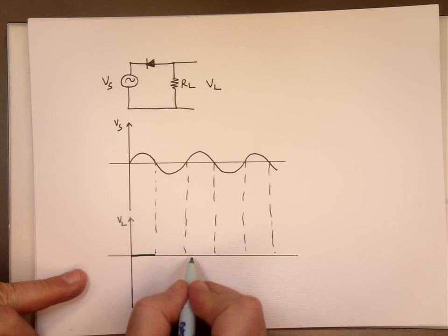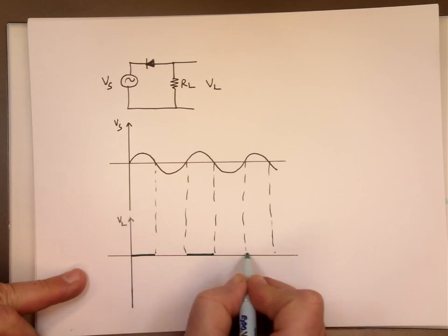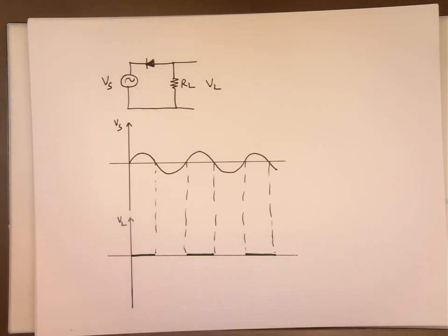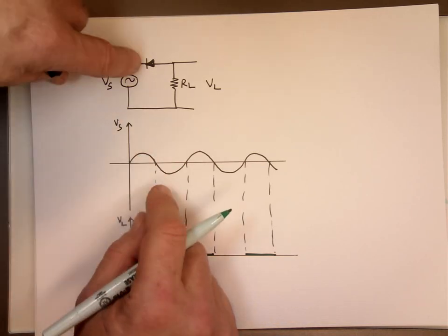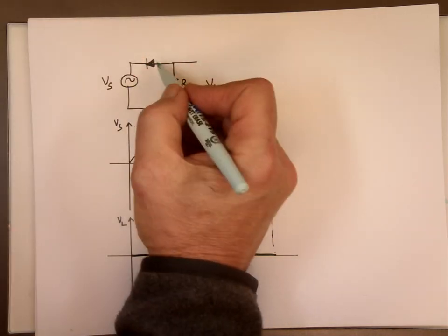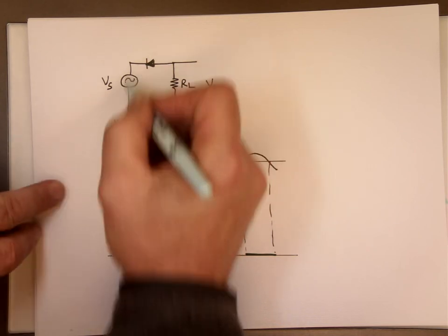So right here is zero, right here is zero, and right here is zero. What happens when this voltage is negative? Well, if this is negative, it's going to make that end higher than this and current will go through it this way.